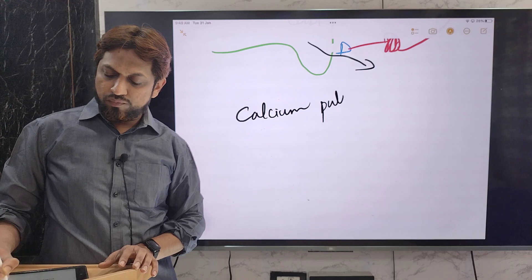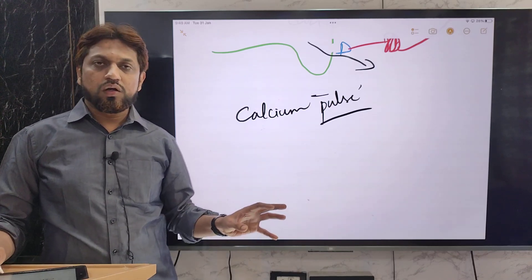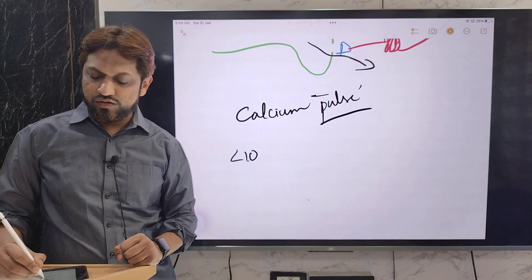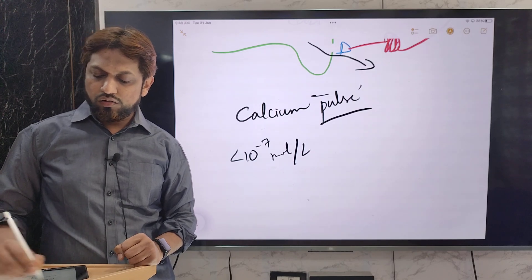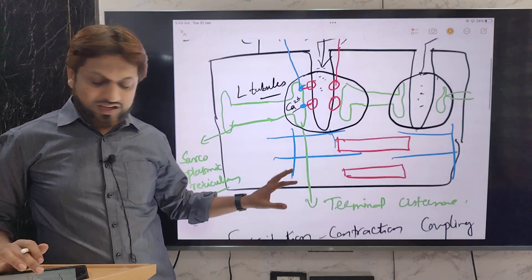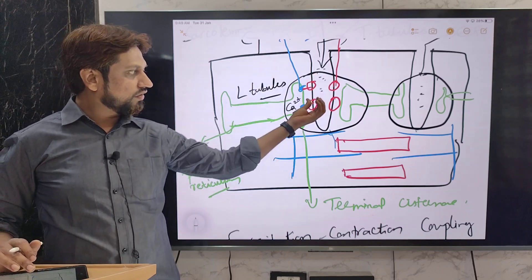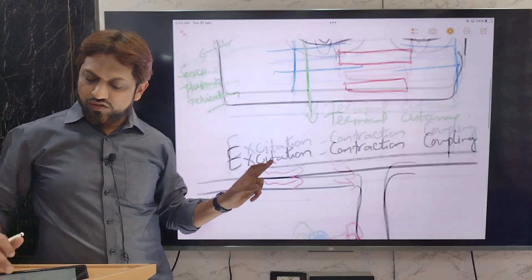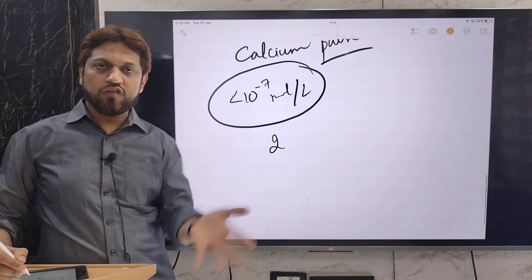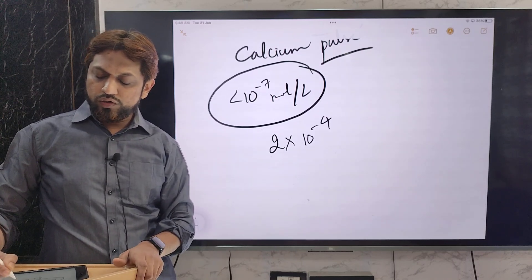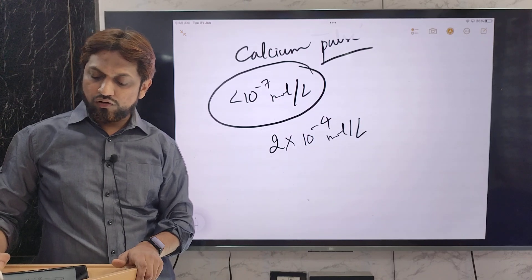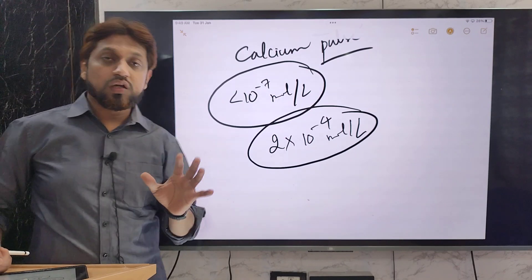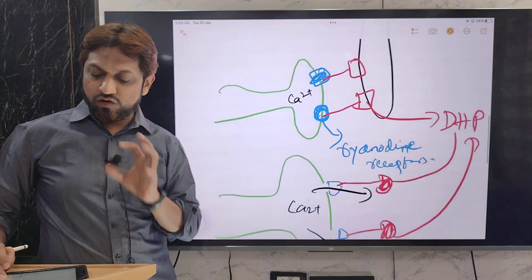This release of calcium is known as a calcium pulse, and it is very important for normal muscle contraction. Generally, the calcium level in the ICF (sarcoplasm) is less than 10⁻⁷ mol/L. But when the action potential arrives and the ryanodine receptors open, calcium from the sarcoplasmic reticulum enters the sarcoplasm and the concentration rises to around 2×10⁻⁵ mol/L — an increase of more than 500 times, which is actually 10 times more than what is required for muscle contraction.